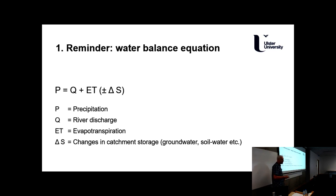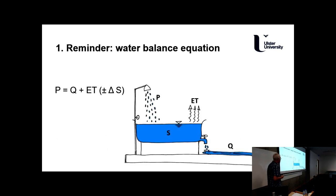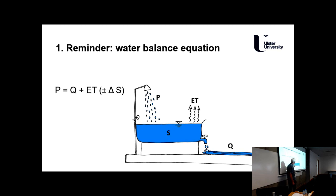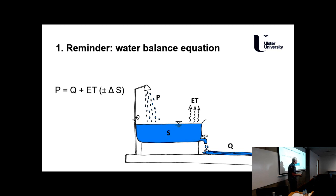So water is stored in catchments and can be lost through drainage or added to through recharge from rainfall — precipitation, river discharge, evapotranspiration, and changes in catchment storage, simplified as groundwater and soil water. And soil water is the big thing that affects our environment here. There's a bathtub model cartoon that explains this, where precipitation adds to a store, some is lost back to the atmosphere, and another component is lost in river discharge. In Northern Ireland, what we tend to do is manipulate the storage component.